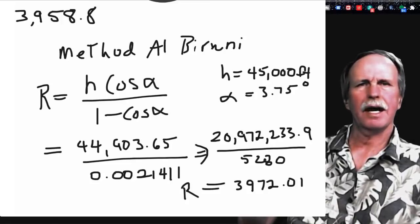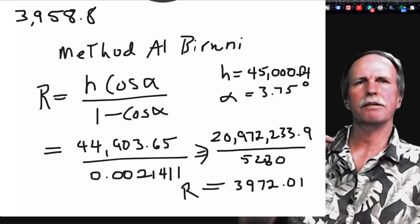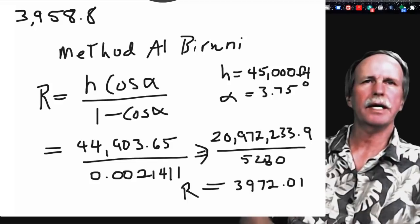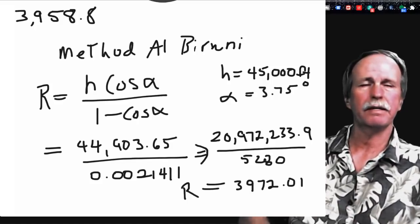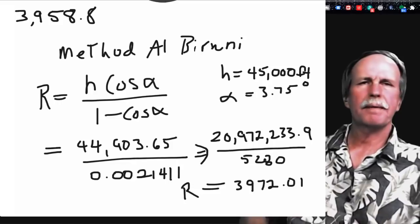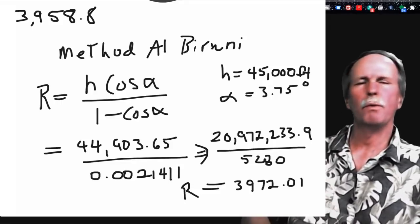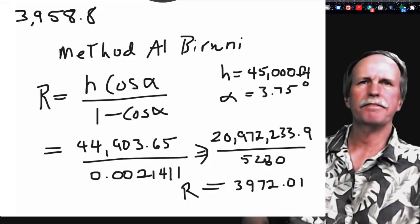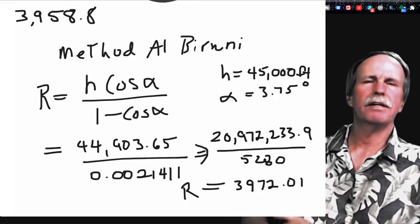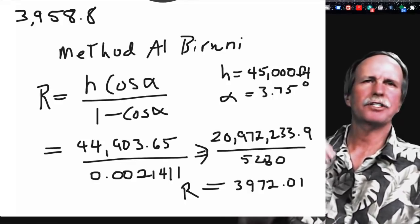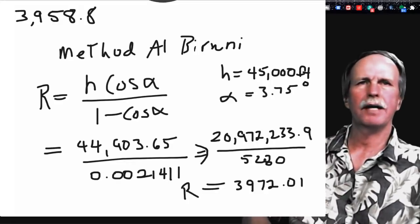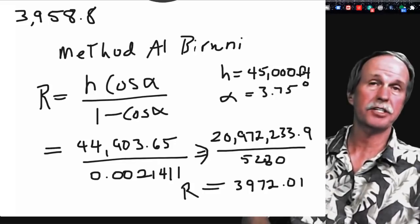If you look at the formula, it's height of the observation times the cosine of alpha (which is the dip), over 1 minus the cosine of alpha. The cosine of 0 degrees — which is what you would get from an elevation of 3 feet — is close to 1. When you have no drop to the horizon because you're measuring from just above the water, this term reverts to h over 0, which is undefined. It simply can't be used from sea level. That's why flat earthers always use sea level observations — because they know it can't be done from sea level.